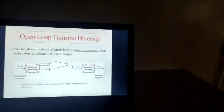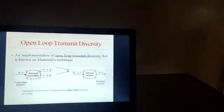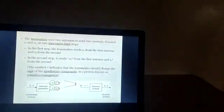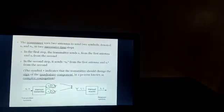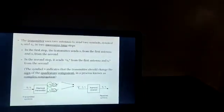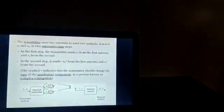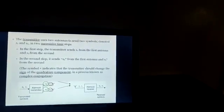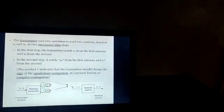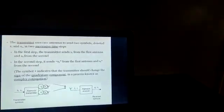An implementation of open-loop diversity is the Alamouti technique. This technique implies the transmitter uses two antennas to send two symbols, denoted by S1 and S2, in two successive time steps. In the first step, the transmitter sends S1 from the first antenna and S2 from the second antenna. In the second step, it sends S2* from the first antenna and S1* from the second. The star symbol indicates the transmission should change the sign of the quadrature component.